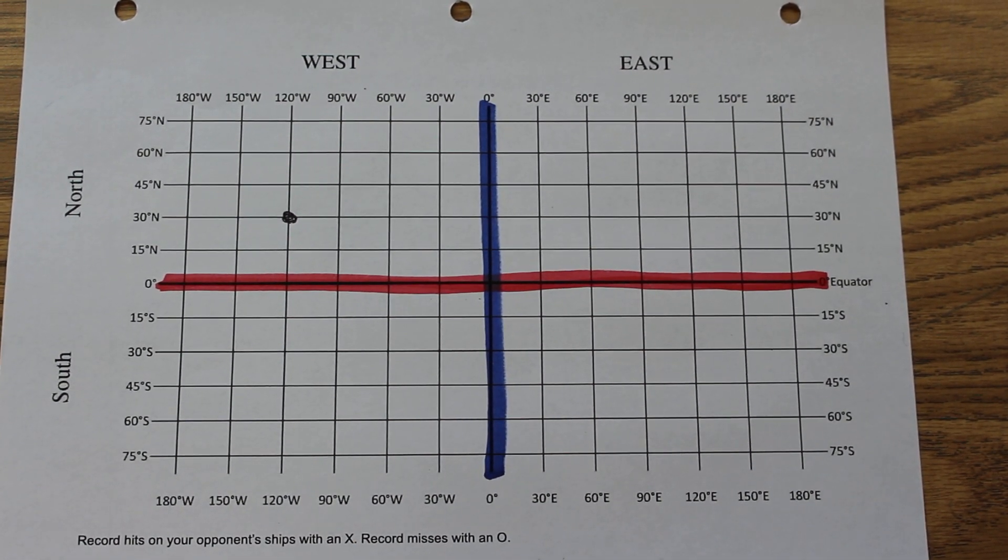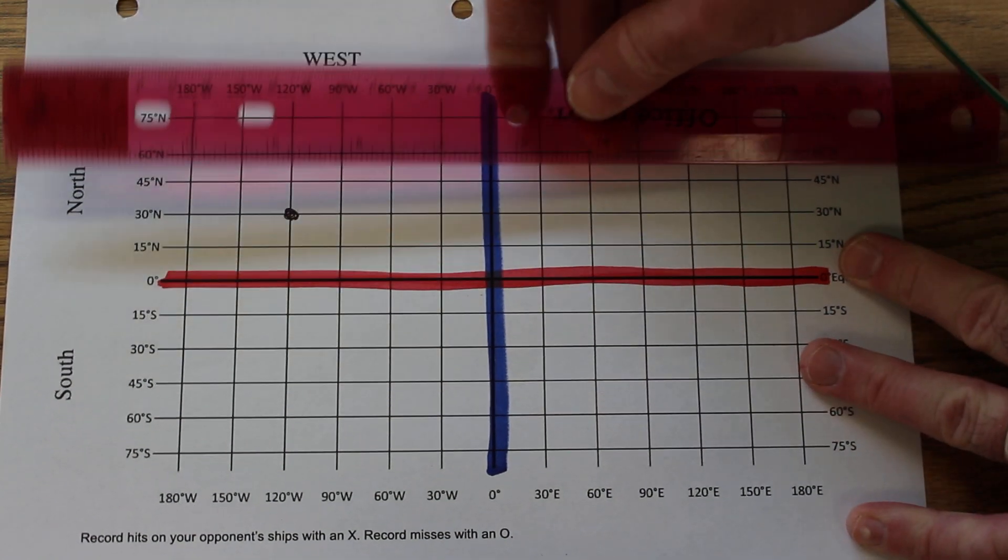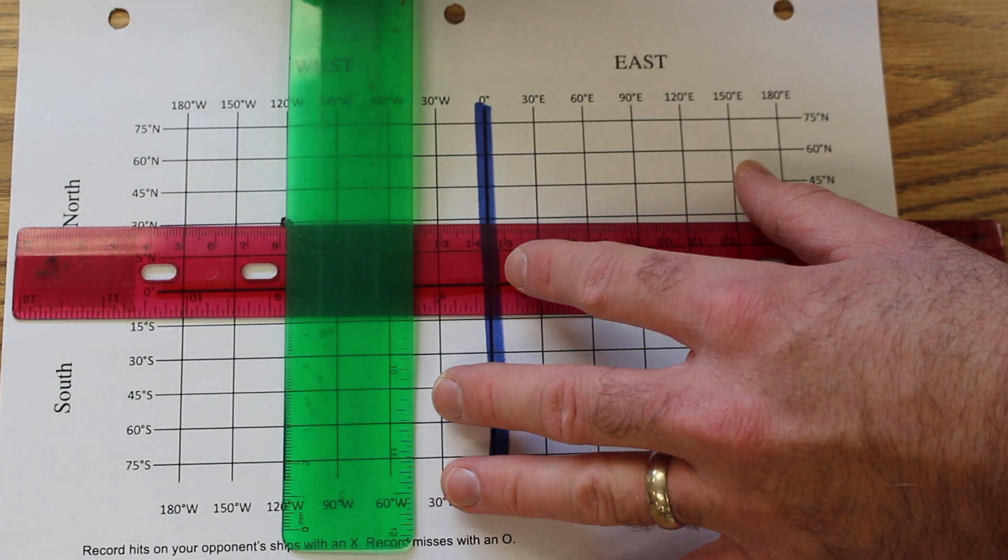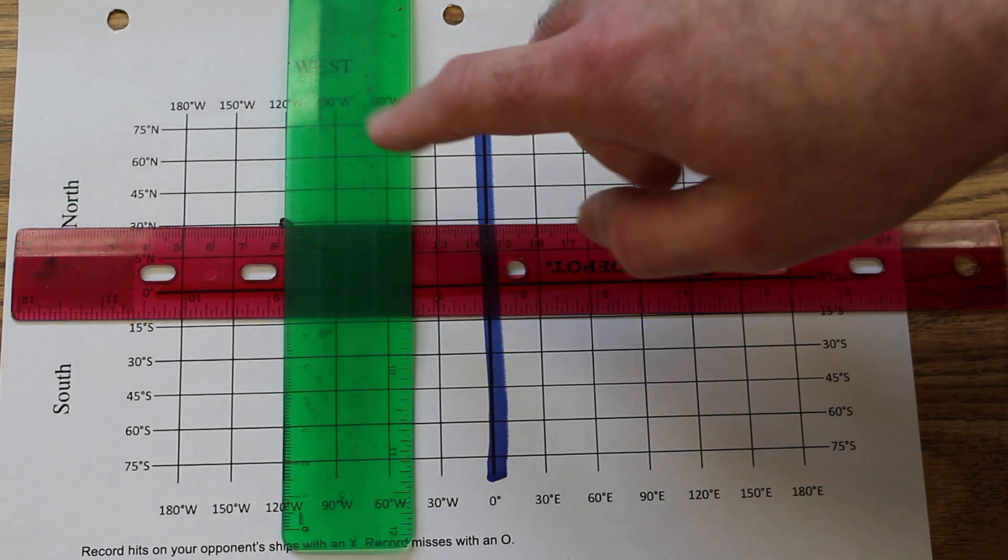Some people like to use rulers when they're first learning latitude and longitude. So you can even easier see where those two lines intersect.